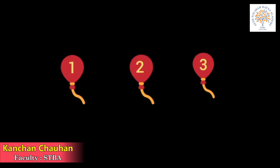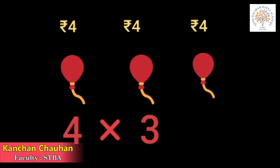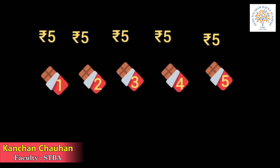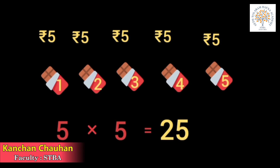If you buy 3 balloons and pay 4 rupees for each, how many rupees do you have to pay? It means 4 into 3 — you have to pay 4 3s are 12 rupees for 3 balloons. And if you buy 5 chocolates and pay 5 rupees for each, you have to pay 5 into 5 is equal to 25 rupees for the 5 chocolates. After learning the tables, you have become smarter. Memorize these tables till our next class. Thank you, have a nice day.